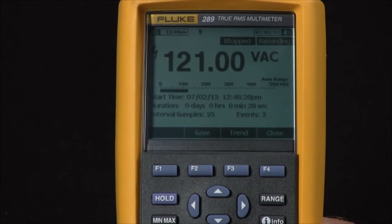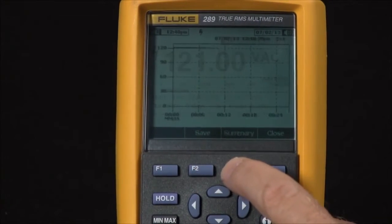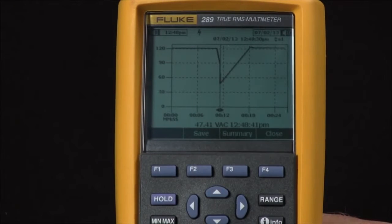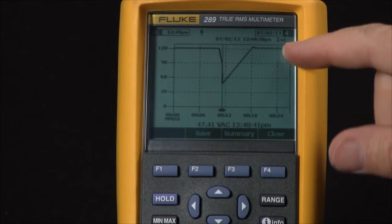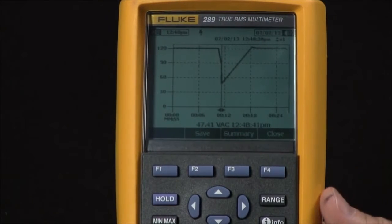Once we hit stop, we have the option to save this as a data record, but we can actually trend it right here on the meter itself so we can see if there were any events or dropouts without having to download this to a PC.